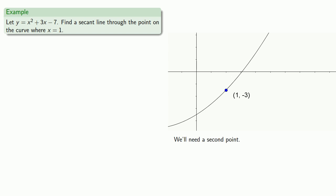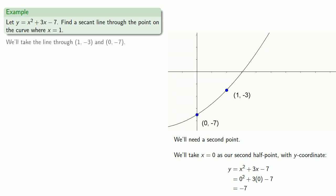We'll need a second point. And since the problem doesn't limit us, we'll take x = 0 as our second half point, and we'll find the corresponding y coordinate and label. So now we have two points, and we'll take our line between the two points: 1, -3, and 0, -7.